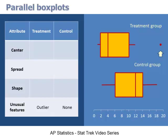Recall that the median of a box plot is represented by the vertical line within the box. This tells us that the median of the treatment group is around 4, and the median of the control group is around 12. Since the median recovery time was about eight days quicker for the treatment group, we might conclude that the experimental drug is effective. With a box plot, we have two ways to measure spread: the range or the interquartile range. The interquartile range is equal to the distance between the right and left sides of the box. For the treatment group, the interquartile range is about 10 minus 2, or 8. For the control group, it is about 14 minus 6, which is also 8.